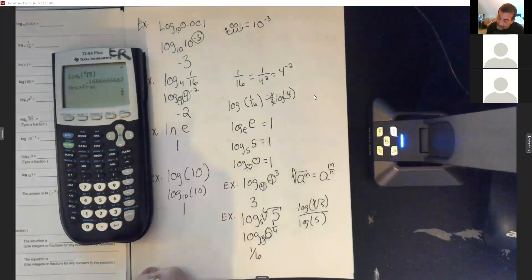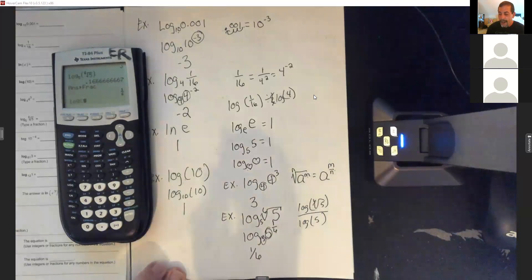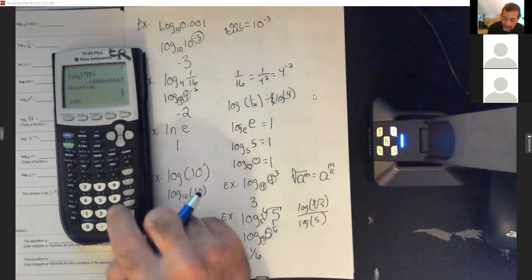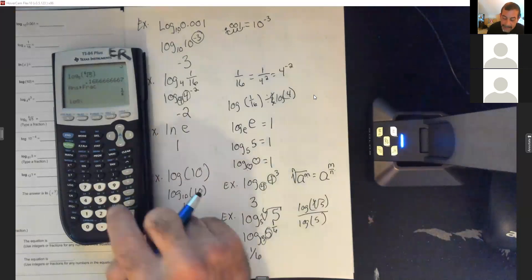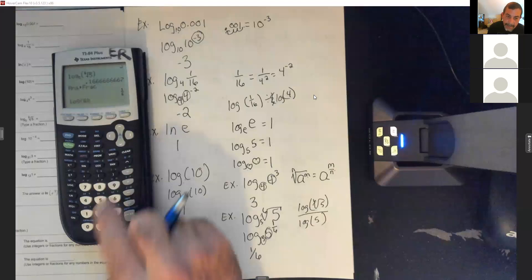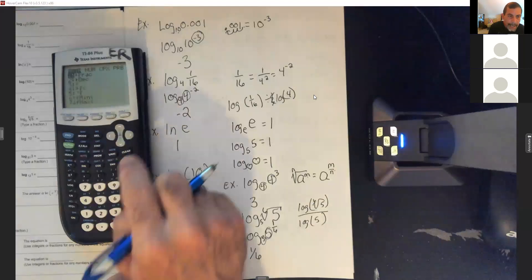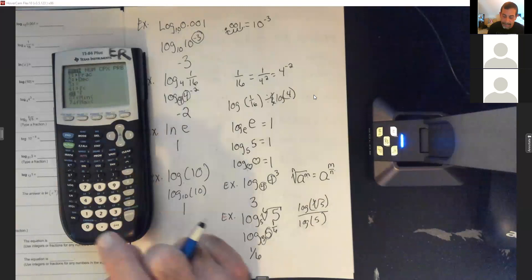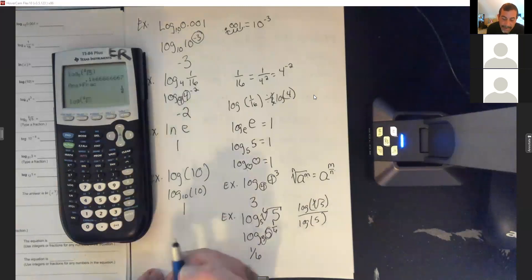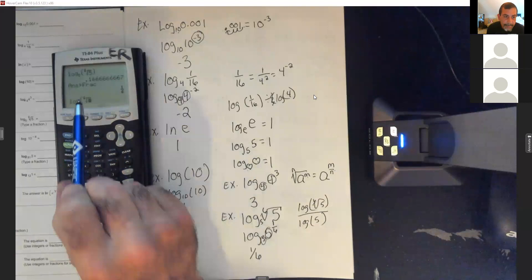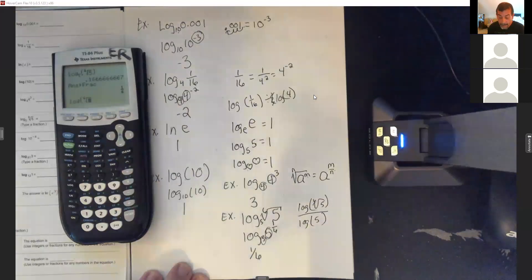For the older calculator method, hit log, then hit 6, then go to math and grab the radical with the x in front of it, hit enter — it puts the 6 in front of the radical. Then put 5 under the radical and close the parentheses.